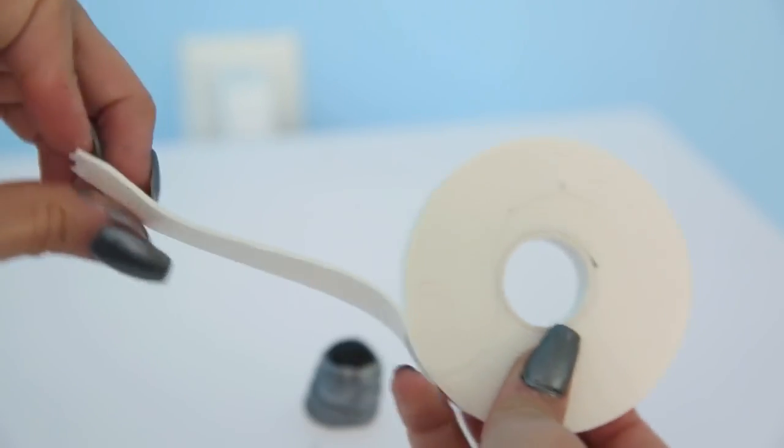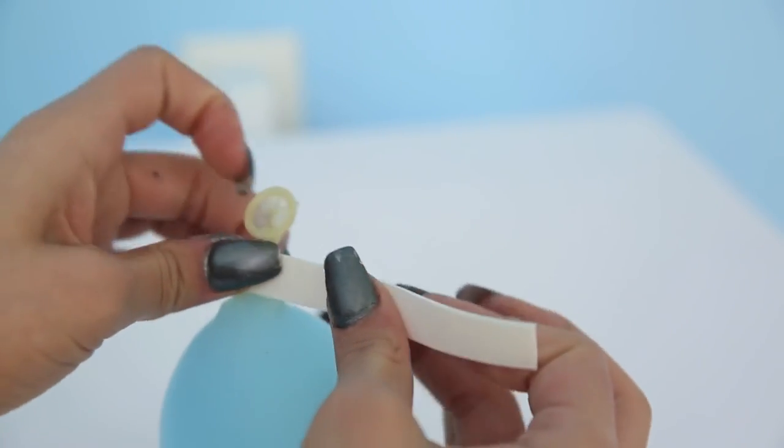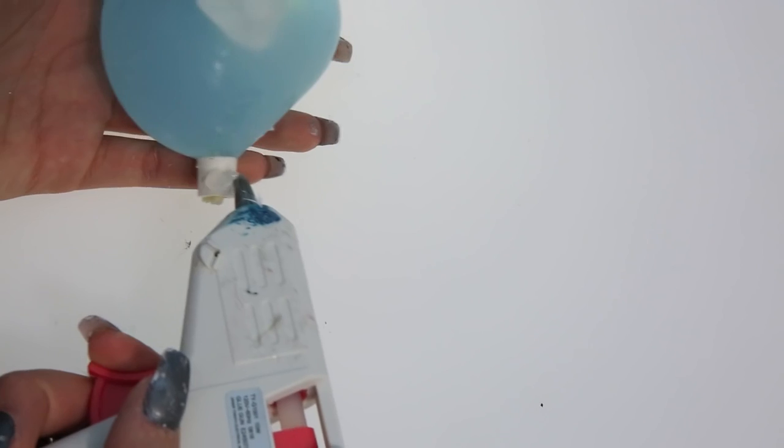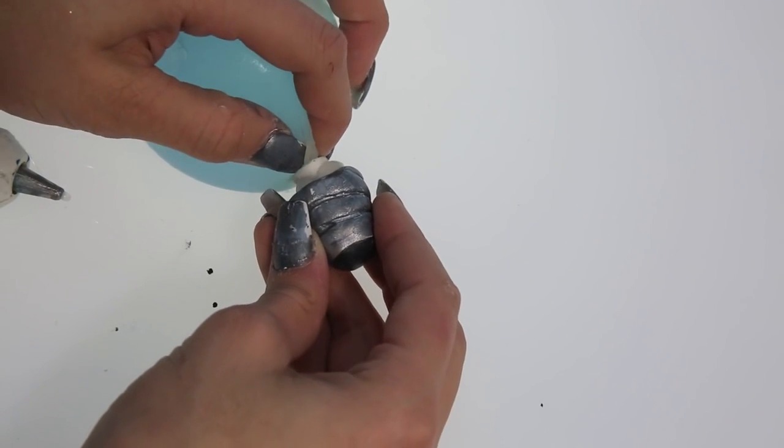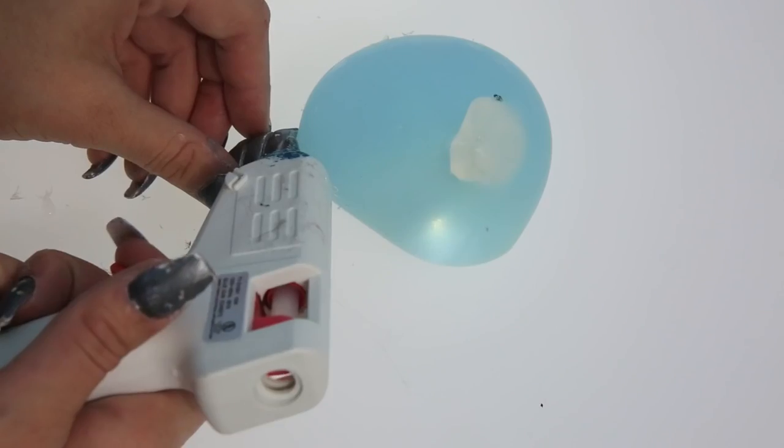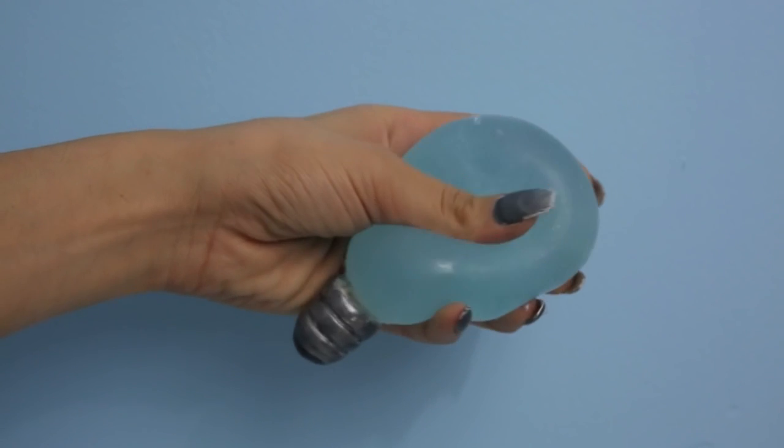Now take some double-sided tape and tape around the bottom of the balloon. Cut off the top of the balloon and then hot glue gun the tape onto the inside of the clay. And now you have a squishy light bulb.